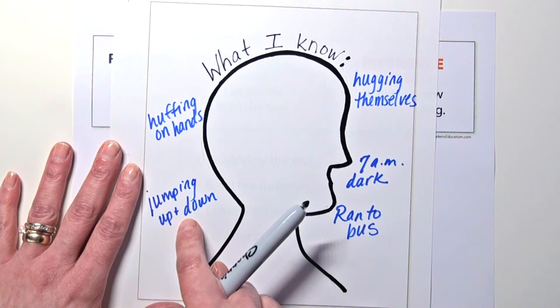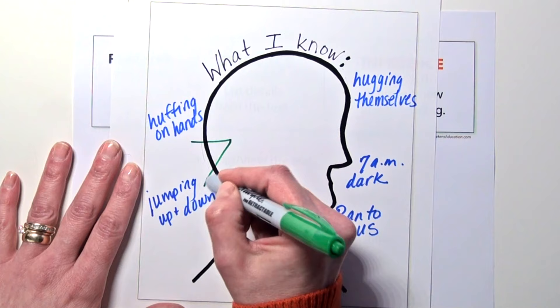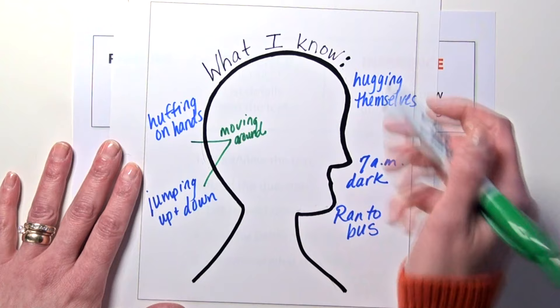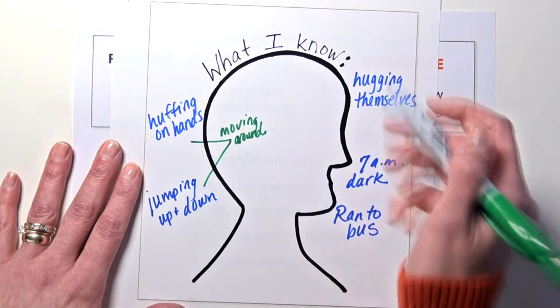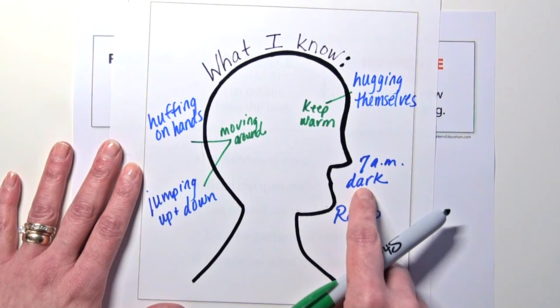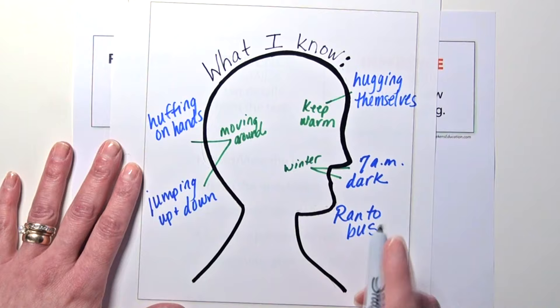This leads us to step four, where we teach students to look for patterns, relationships, and what the details have in common. You're going to ask them to put clues together. What does it mean when you jump up and down? That detail alone might mean they have to go to the bathroom — but when you combine jumping up and down with rubbing and huffing on their hands, you realize they're trying to create heat. They're hugging themselves, trying to keep warm. That's a mini inference. And it's dark at seven — it's not dark at seven in summer, but it is in winter.